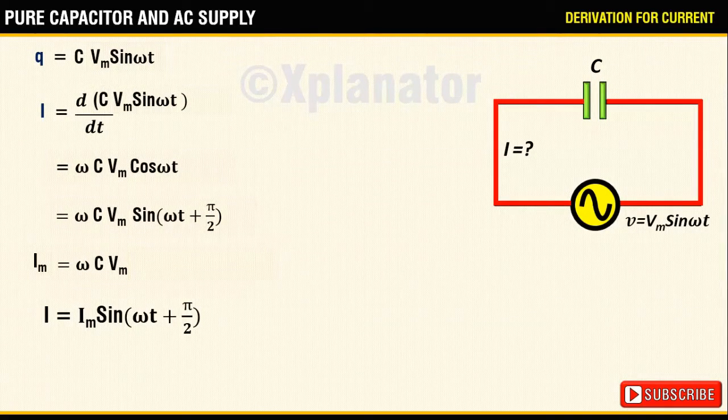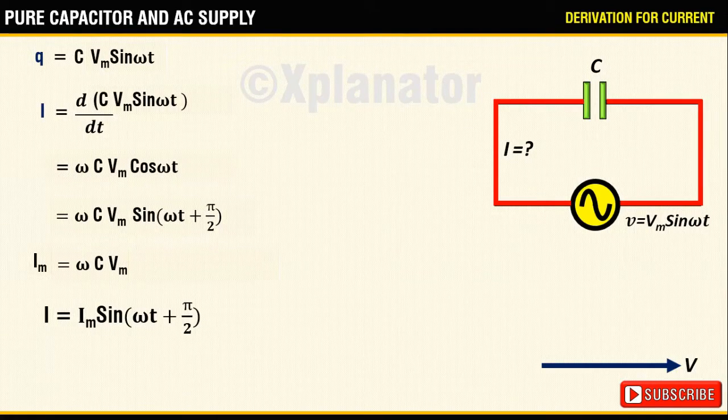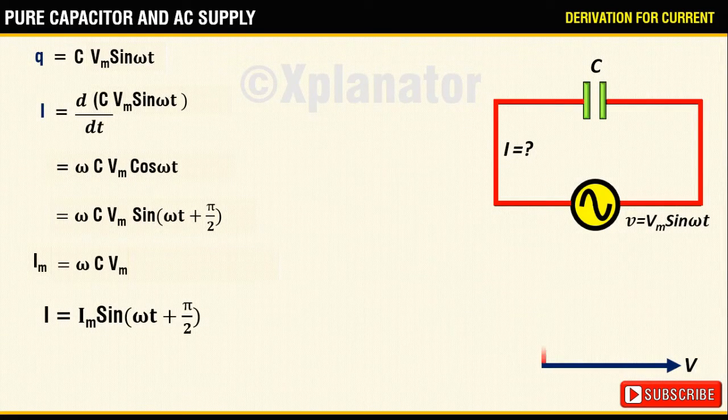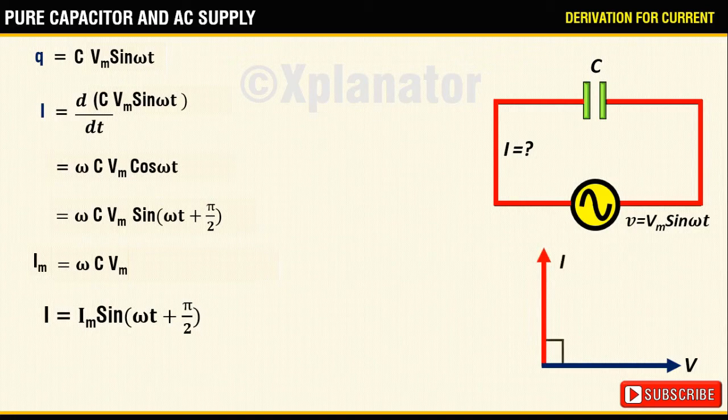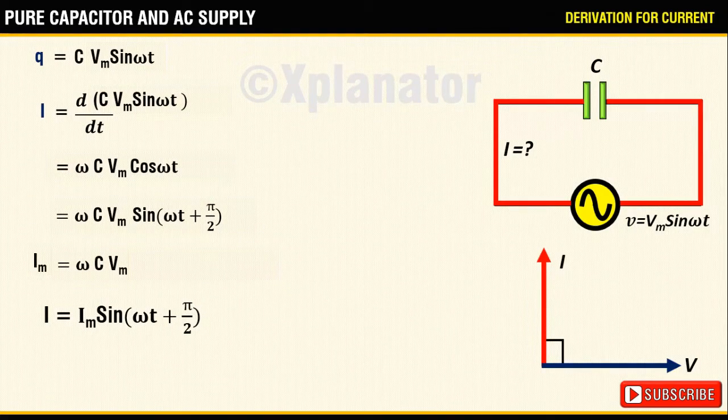To represent this on a phasor diagram, take voltage as a reference line and since current leads the voltage by 90 degrees as per the expression, you draw the current phasor at an angle of plus 90 degrees, i.e., it points in the positive y direction.